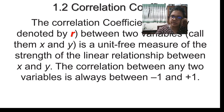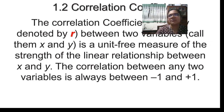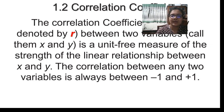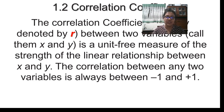The correlation coefficient between two variables is a unit-free measure of the strength of the linear relationship between X and Y. The correlation between any two variables is always between minus one and plus one. If you generate the correlation coefficient and you get a value like 2, 3, 1.9, or 1.1 — a value exceeding minus one and plus one — that means the value you have got is wrong; you have made a mistake somewhere.